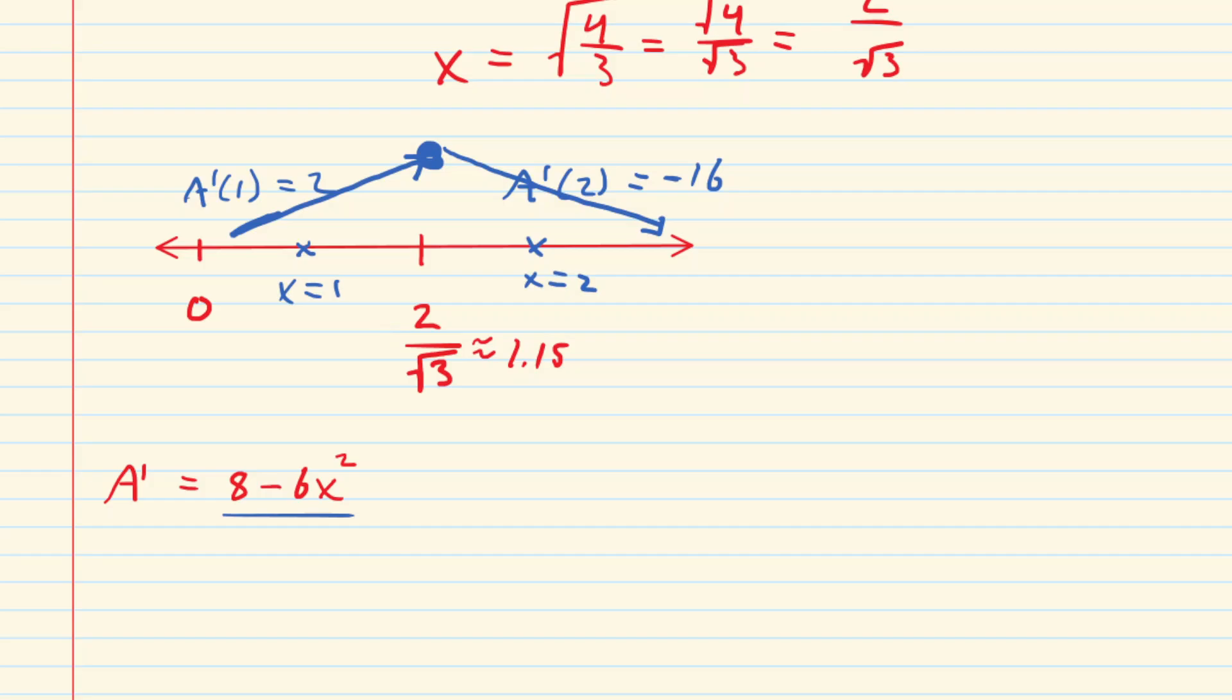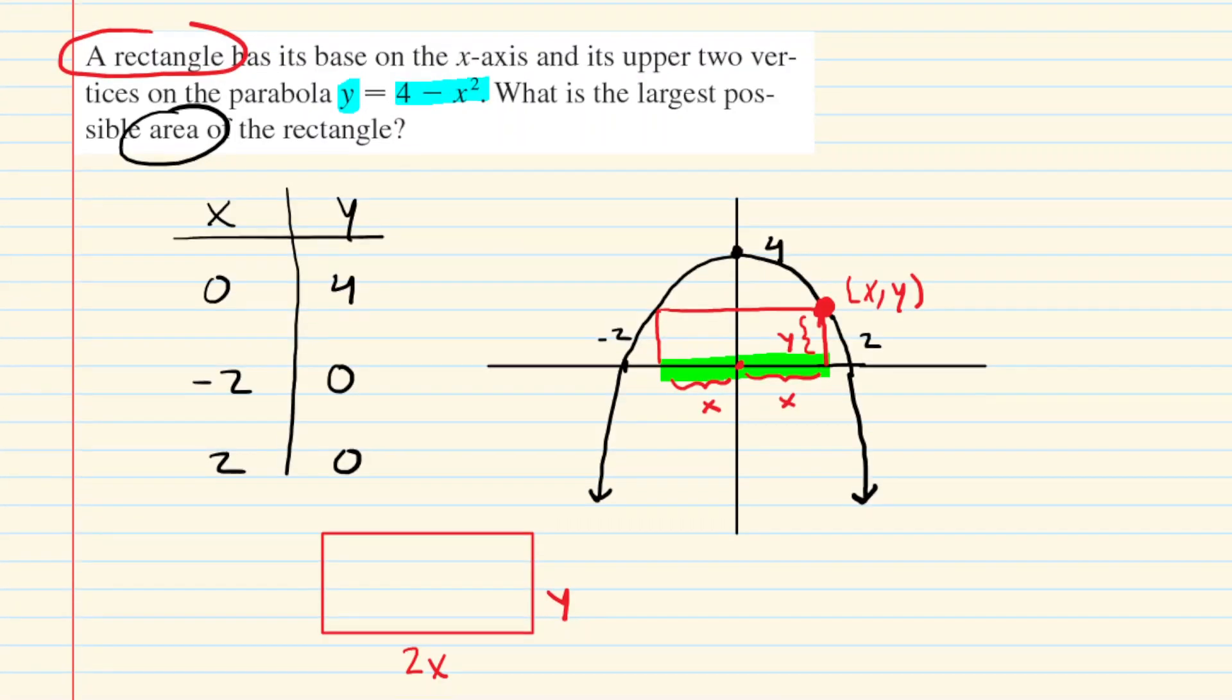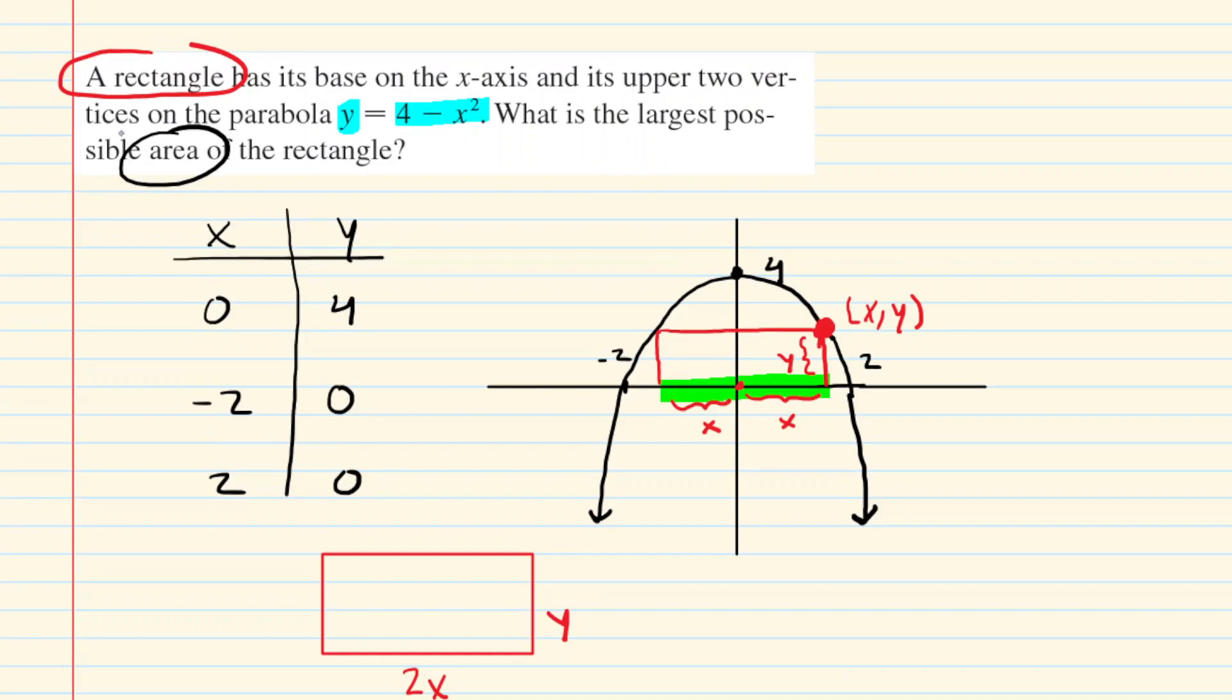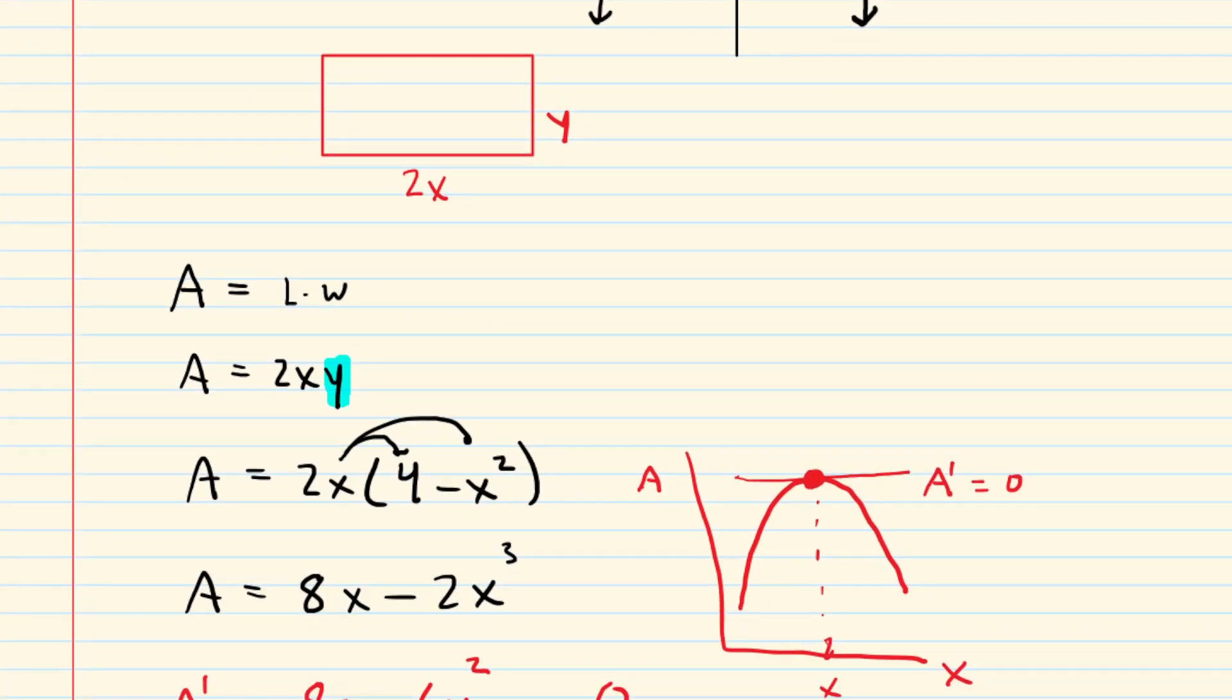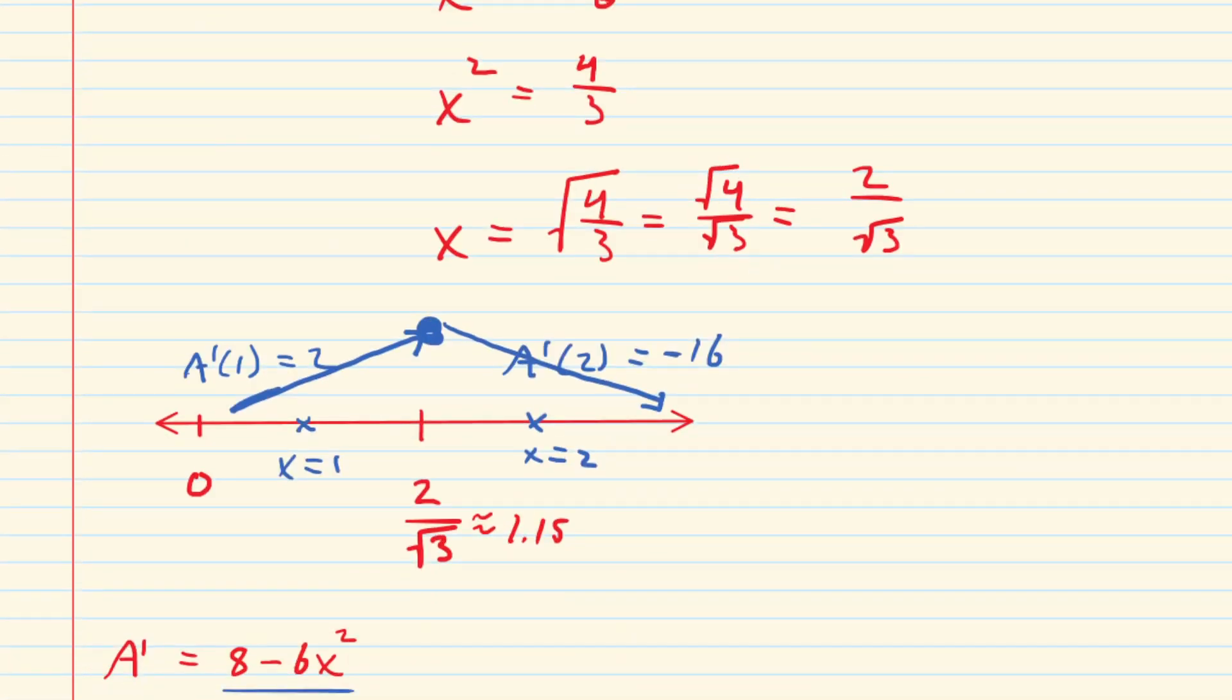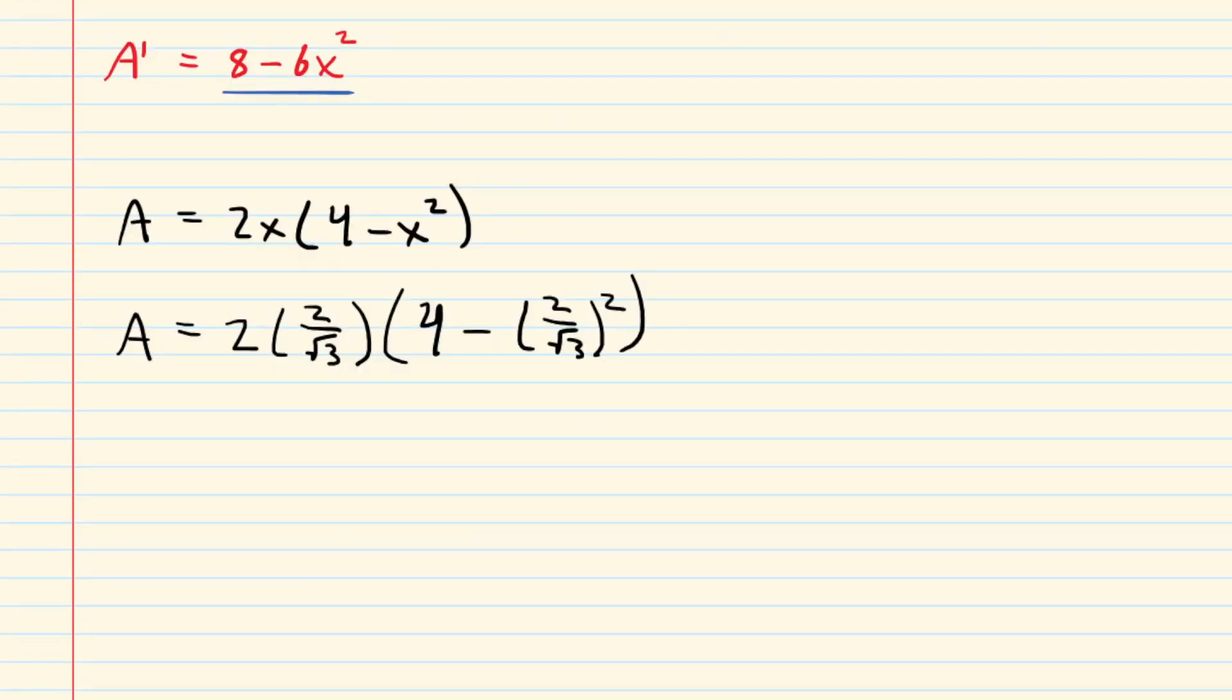So that is great, but we want to make sure we answer the question. The question specifically asks us to find that area, to find the largest possible area. So what we'll do is look for our area function, which perhaps we can use this version of it right here. And we're going to go ahead and plug our critical number into that area function. So we're going to take that x equals 2 over the square root of 3, and we're going to plug it into our area.